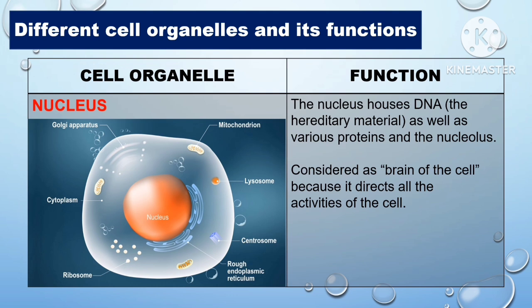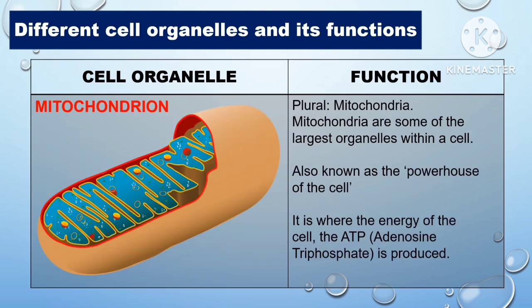The following are the different cell organelles and their functions. The first one is the nucleus. The nucleus houses DNA, the hereditary material, as well as various proteins, and is considered the brain of the cell because it directs all its activities. Another organelle is the mitochondria — some of the largest organelles within a cell, also known as the powerhouse of the cell. It is where the energy of the cell, which is the ATP, is produced.